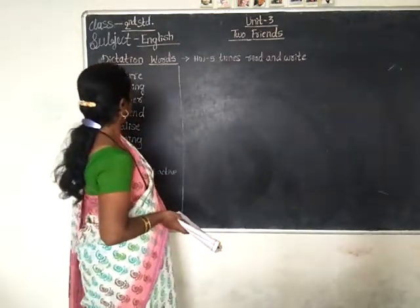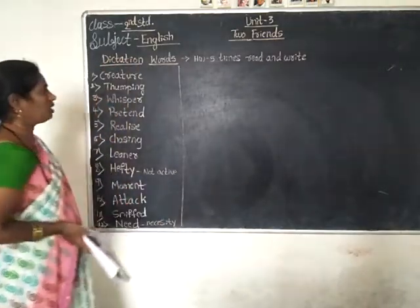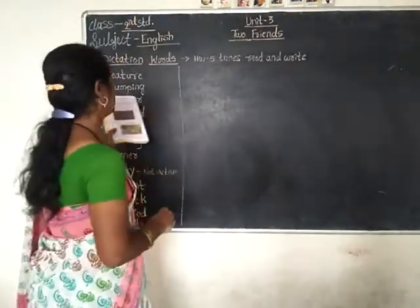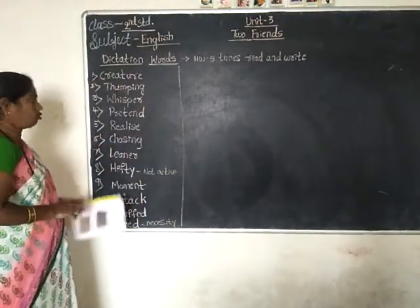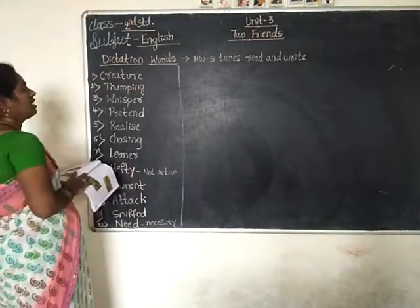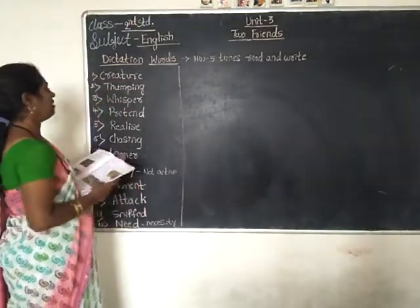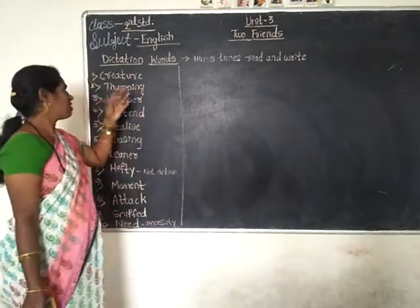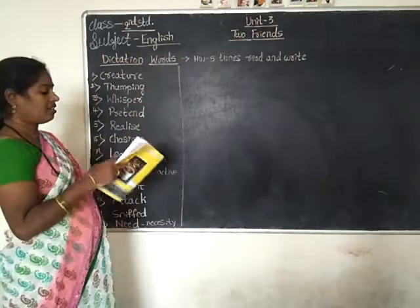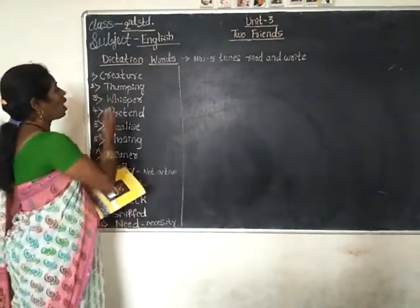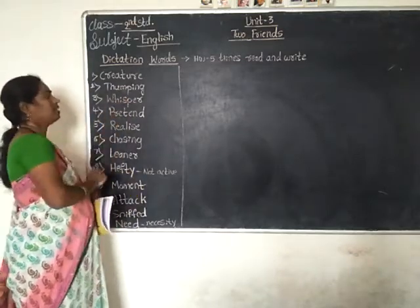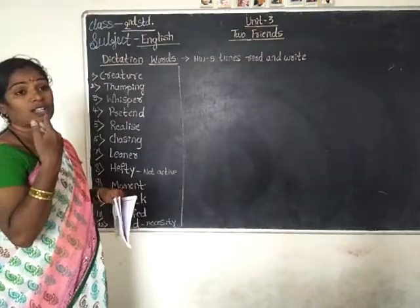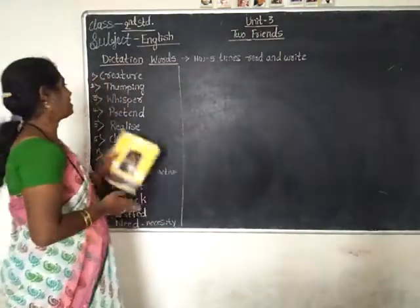Here are the dictation words you should underline in your lesson. Creature means a living thing, a living being which has life — that which lives in our environment is called a creature. Thumping means very heavy steps, heavy walking. Whisper means a very soft voice, speaking very softly — that is called whispering.